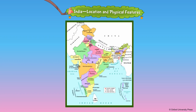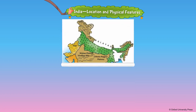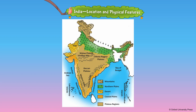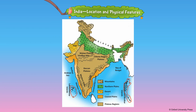It is surrounded by water on the three sides. Thus, it is called a peninsula. India has different physical features. It can be broadly divided into six natural regions: the Northern Mountains, the Northern Plains, the Great Indian Desert, the Deccan Plateau, the Coastal Plains and the Islands.